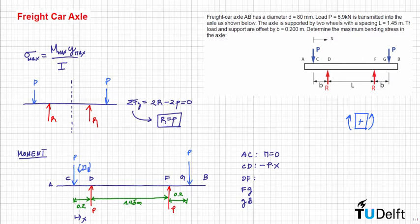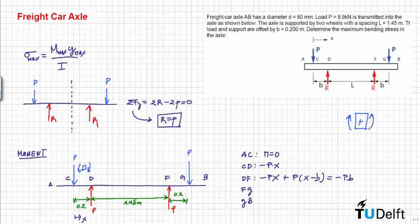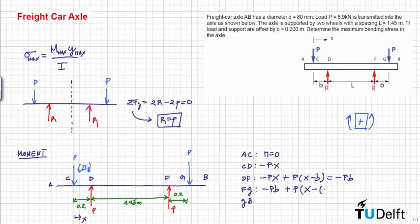For section DF, we have the contribution of force P giving minus PX, plus the contribution of reaction force P, which is positive and located at distance X minus 0.2, and this equals minus PB. For section FG, we similarly have minus PB plus P times (X minus 0.2), which equals minus P plus PX. For section GB, the end is free and M is equal to 0.